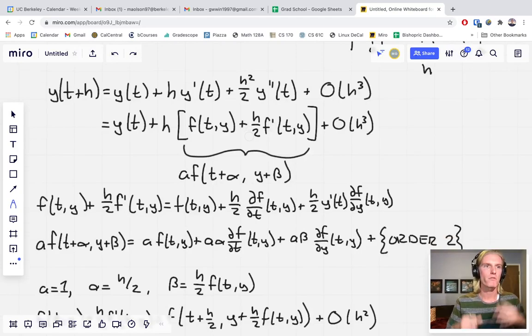Now, one of the goals of the Runge-Kutta method is we don't like taking these derivatives here. That is painful. So what we're going to do is we're going to replace it with something that looks like this, replacing this whole bracketed term.